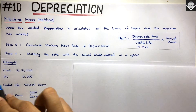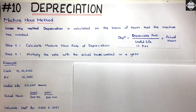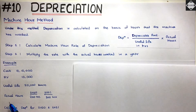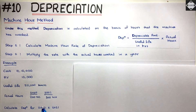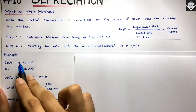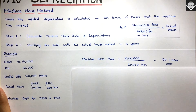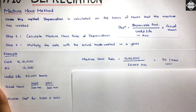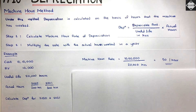Let's work through a simple example. Cost of machinery is 10 lakh, residual value is 10,000, useful life is 20,000 hours, and actual hours worked are 200 hours in 2020 and 300 hours in 2021. Calculate depreciation for both years. First, we calculate the depreciable amount: 10 lakh minus 10,000 equals 10 lakh (approximately). Then the Machine Hour Rate: 10 lakh divided by 20,000 hours equals 50. So the depreciation per hour is 50.